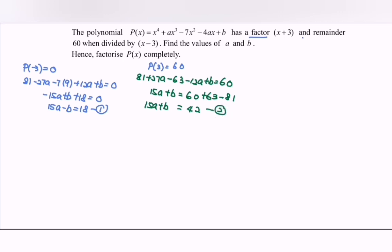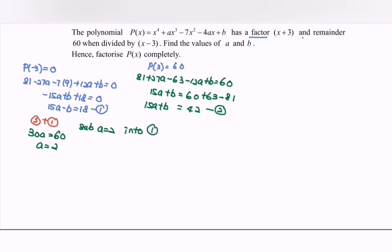By referring to the situation, my suggestion would be to use Equation 2 plus Equation 1. Then we will have 30A = 60, so A is equal to 2. Substituting A = 2 into the first equation: 30 - B = 18, so B is equal to 12.